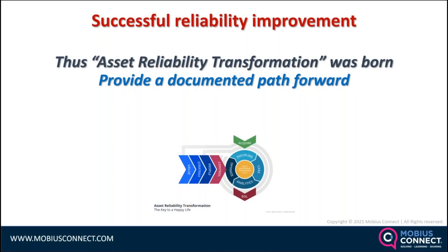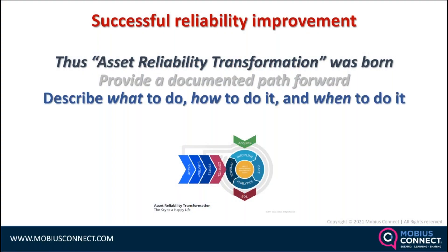The aim of this thing called the Asset Reliability Transformation is an attempt to describe what to do, how to do it, and when to do it. Everyone listening comes from different organizations — steel plants, pharmaceutical plants, wastewater districts, oil and gas — and you might ask how one strategy can work for everybody. The point is that everyone faces the same challenges regarding senior management support, culture change, getting the foundations right, planning and scheduling, condition monitoring, and more. It's all about doing it in a structured way, doing what's right for you at the right time.